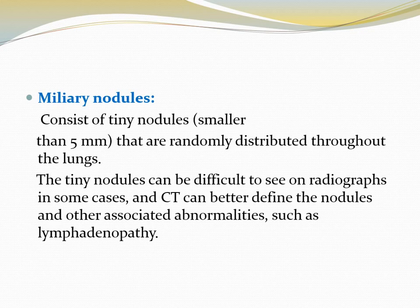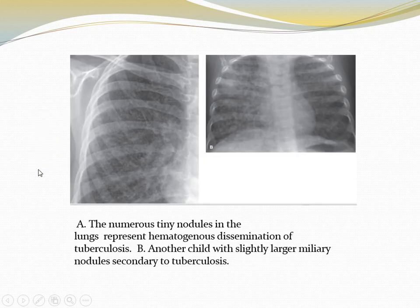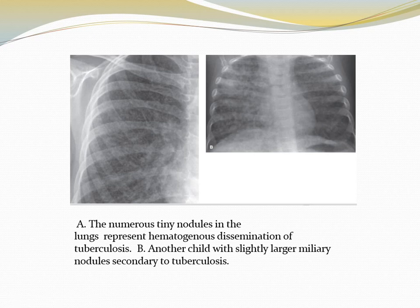Miliary nodules consist of tiny nodules smaller than 5 mm that are randomly distributed throughout the lungs. They can be difficult to see on radiographs, and CT can better define the nodules and other associated abnormalities such as lymphadenopathy. Causes include infection by tuberculosis, histoplasmosis, or viral; idiopathic pulmonary hemosiderosis; and metastatic disease. Cases showing multiple tiny nodules bilaterally are caused secondary to tuberculosis — miliary tuberculosis.